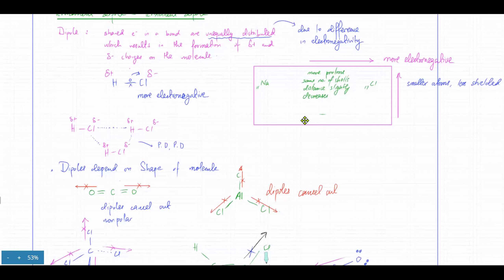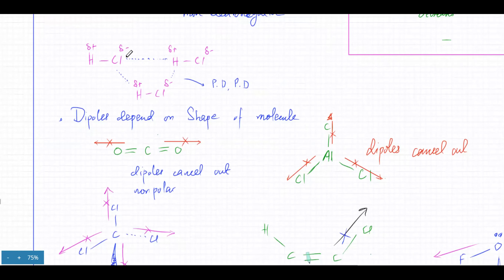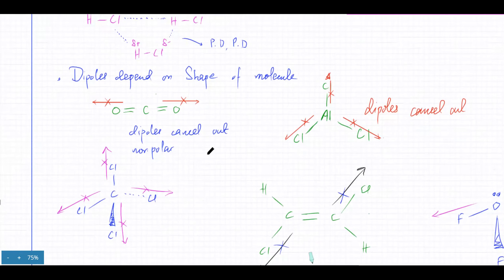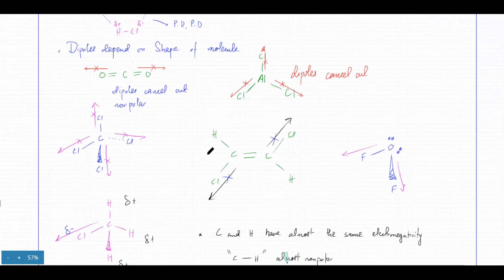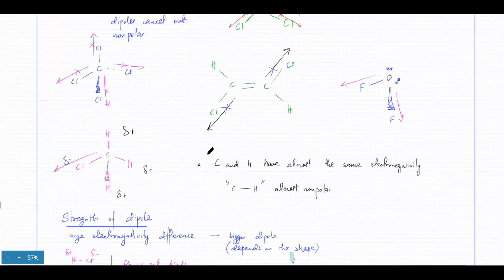In permanent dipole-permanent dipole interaction, a molecule has an electronegativity difference which results in partial positive and partial negative charges, causing one molecule to attract another. The negative side attracts the positive side. The dipole depends on the shape of the molecule, and dipoles can get cancelled out - for example, in a carbon dioxide molecule, the forces of attraction cancel out like vectors.